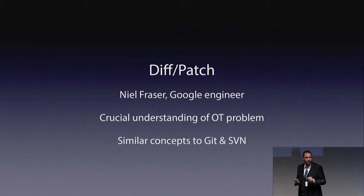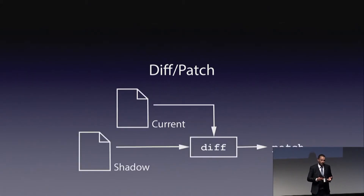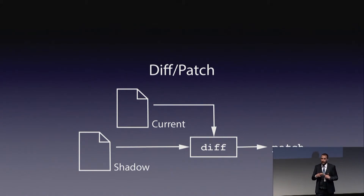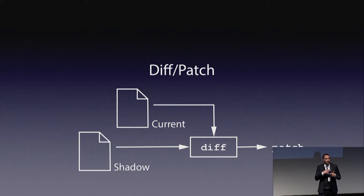The idea is quite easy to understand — it's a similar concept to tools we use daily as developers, like Git or SVN. We have our current document on which we are making edits, but the system also still has in memory a previous version of the document — the last version we pushed to the server. It's called the shadow document. Then using a diff tool, we make the difference between those two versions to produce a patch, which is sent to other people on the network and applied on other remote sites.